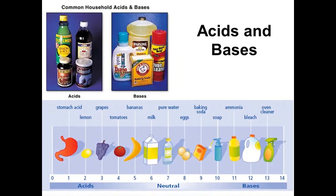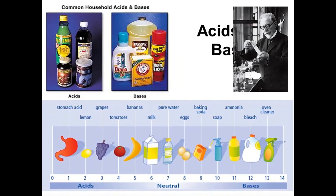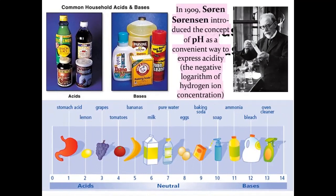In your experiment you're going to test some common household substances—whatever you have in your house. You're not going to get your stomach acid; please don't do that. Someone in 1909 actually invented the pH scale—I had always taken it for granted. It's a man-made concept: the pH scale has the negative logarithm of hydrogen ion concentration. It's easier to say tomatoes are a four or lemons are a two. The lower the pH, the more acidic; the higher the pH, the more alkaline or basic.